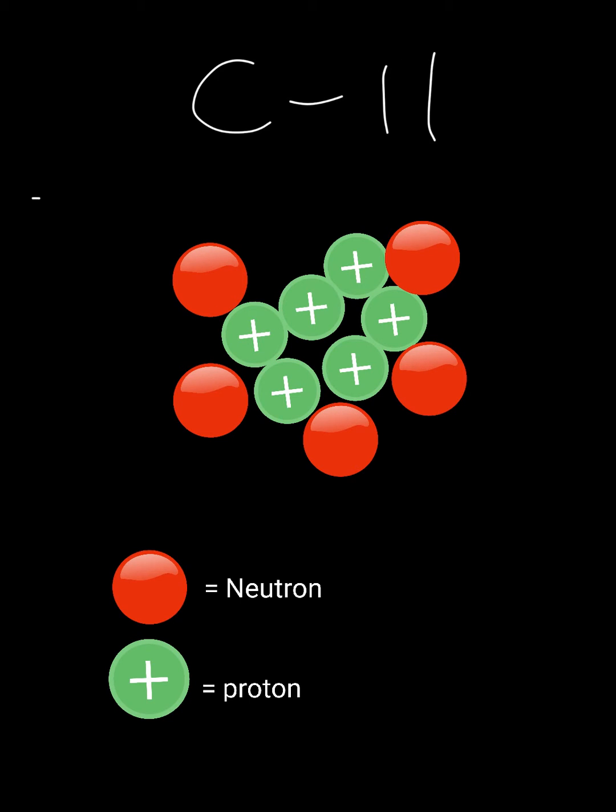So this is basically what an isotope is. It just has a different number of neutrons. Be careful not to change the protons, because if you do that you're creating a different element and it's no longer an isotope.